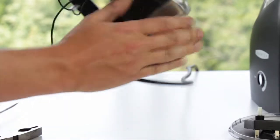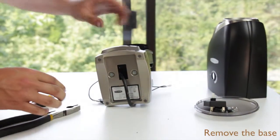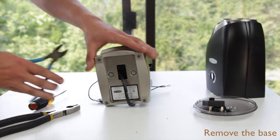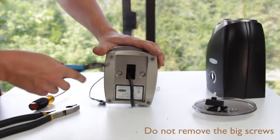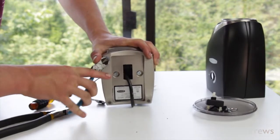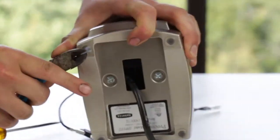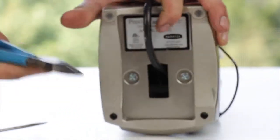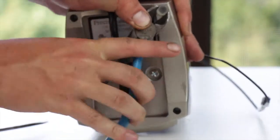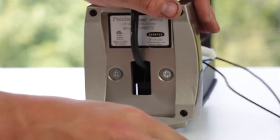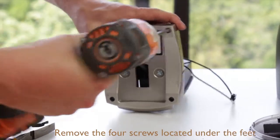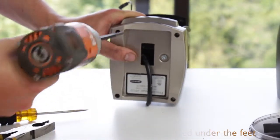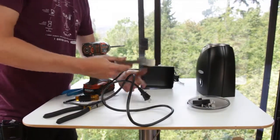Before we do the power cord, I'm going to go ahead and remove the base from the unit. Remove the four feet from the bottom of the grinder. As tempting as the two obvious Phillips screws are, they do not hold the base on the chassis and do not need to be removed. After removing the four feet, remove the screws from underneath. With all four screws removed, we can go ahead and pull the cord through the base and put the base to the side.